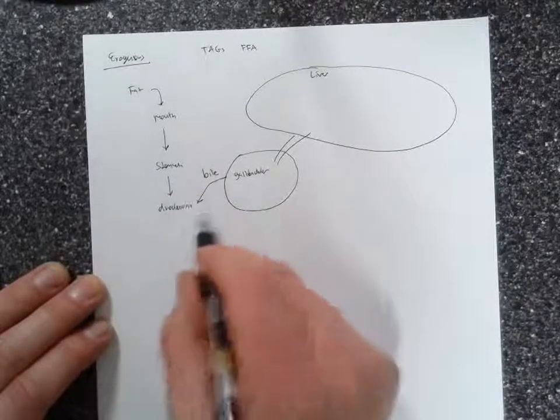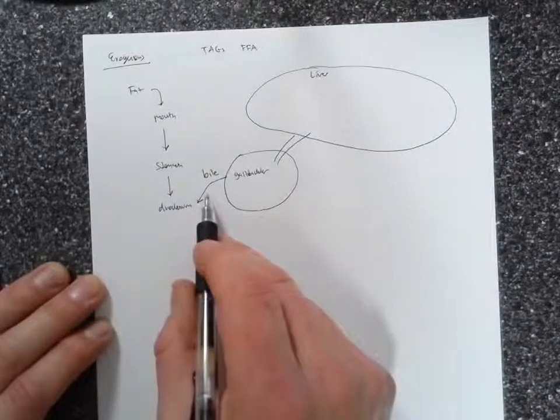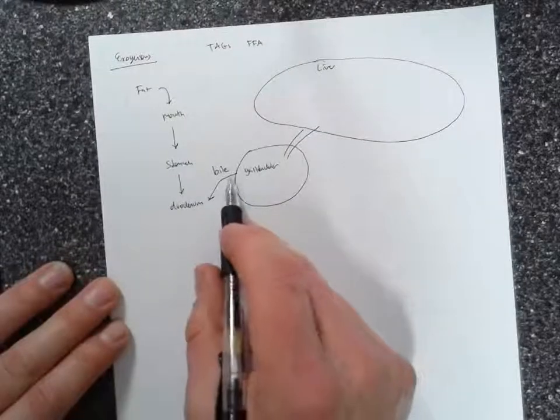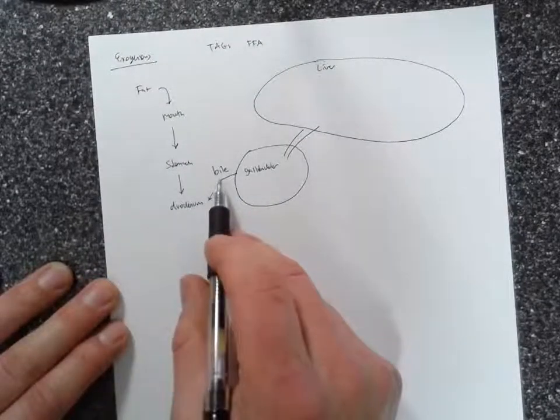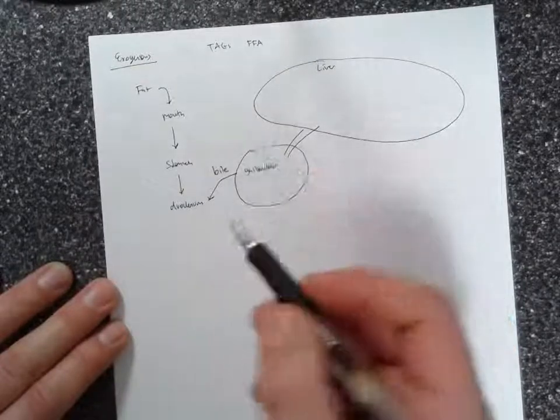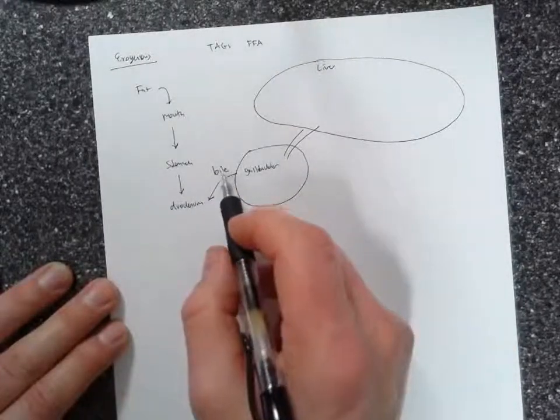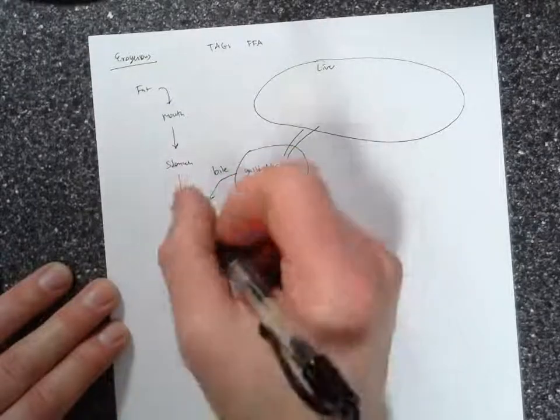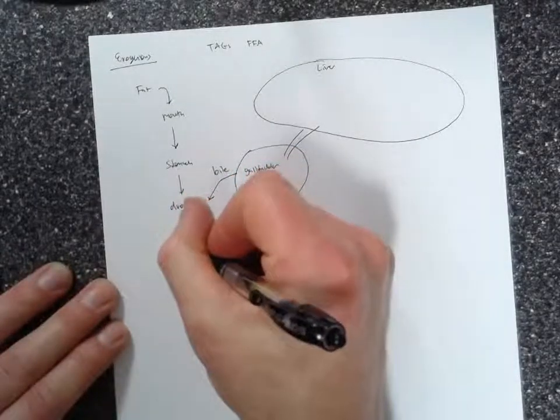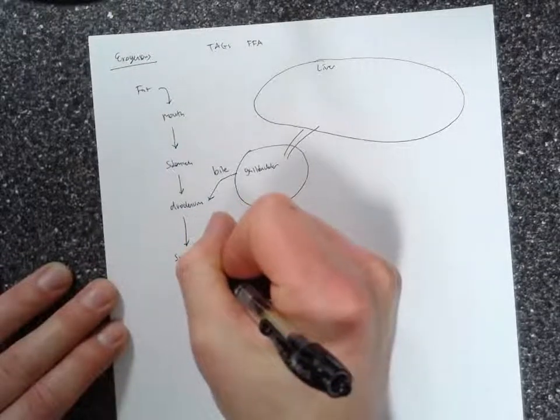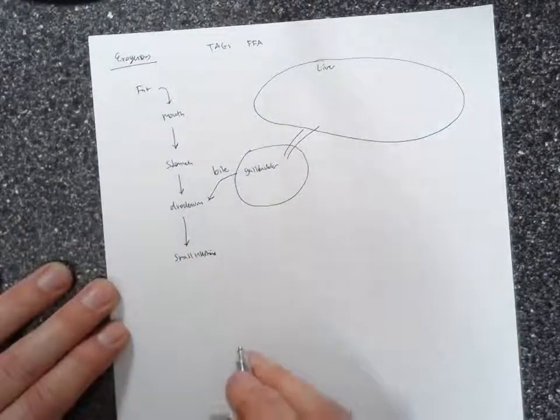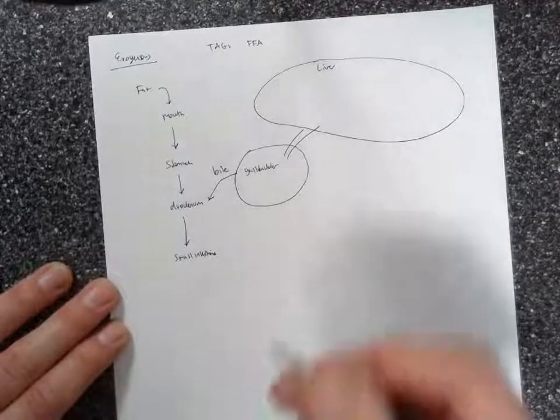And so what happens in the duodenum is that these triacylglycerols are emulsified by this bile. They're made soluble because the bile has hydrophobic portion and hydrophilic portion. And so this emulsion passes through the duodenum and then into the rest of the small intestine where these triacylglycerols begin to be broken down by lipases.